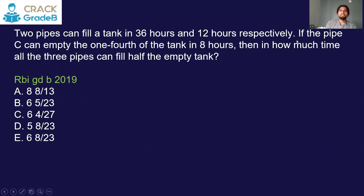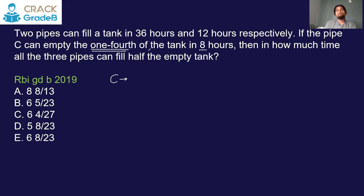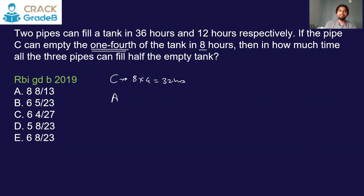Now let's see RBI Grade B questions. Two pipes can fill a tank in 36 and 12 hours respectively. Pipe C can empty one-fourth of the tank in 8 hours — so C empties the entire tank in 32 hours. Pipe A fills in 36 hours, pipe B fills in 12 hours, and pipe C empties in 32 hours.